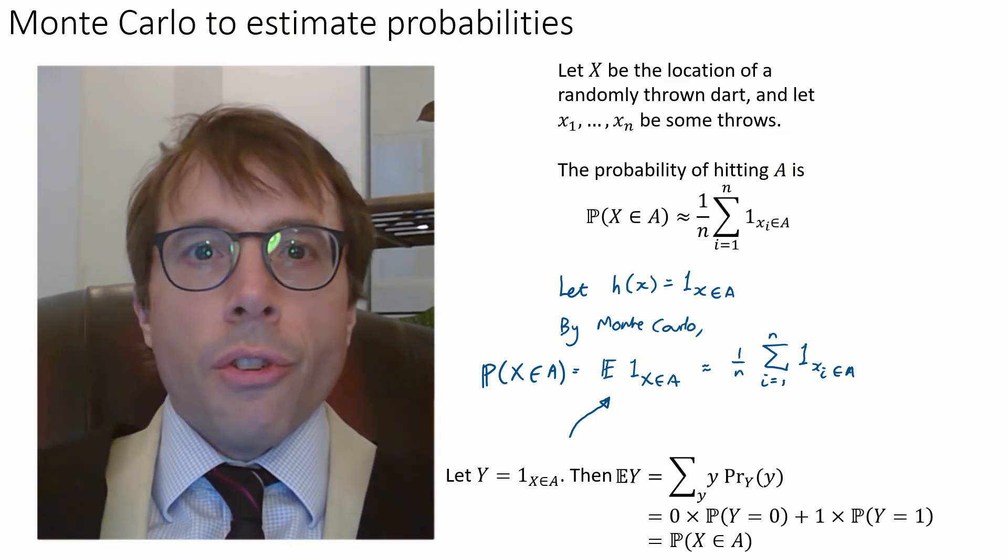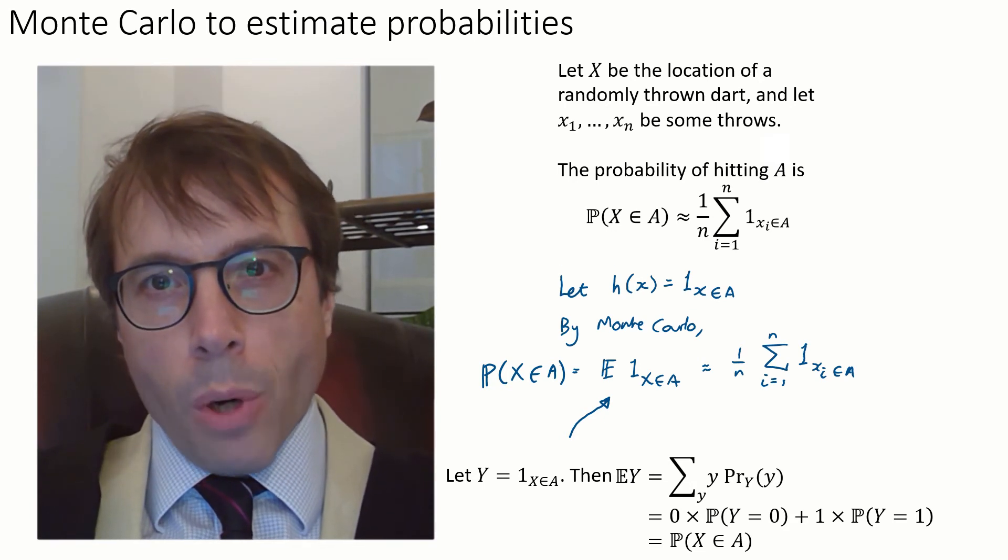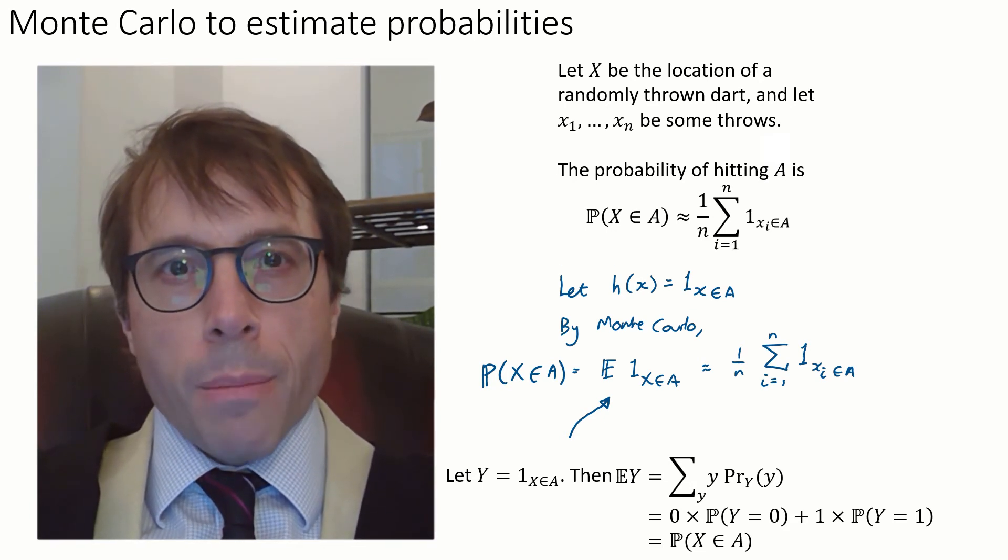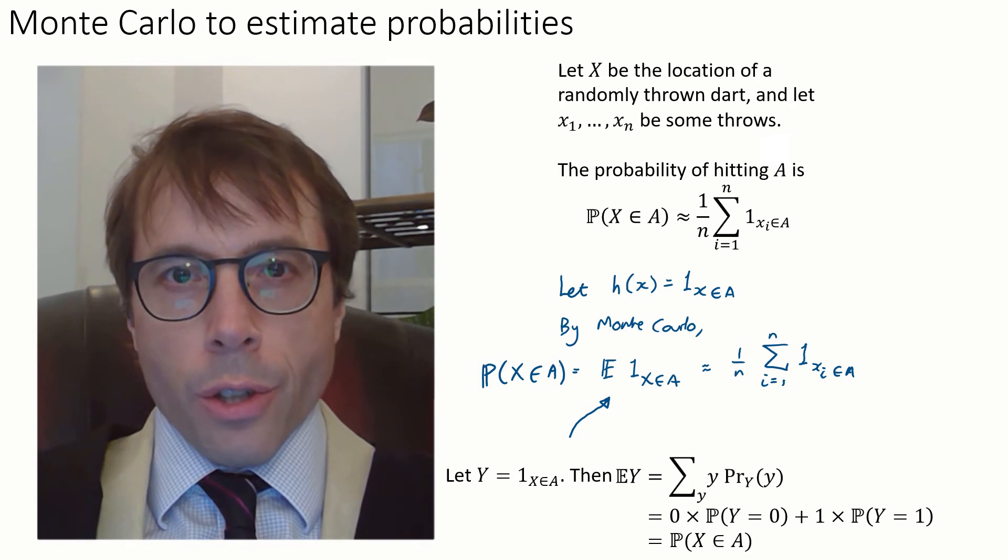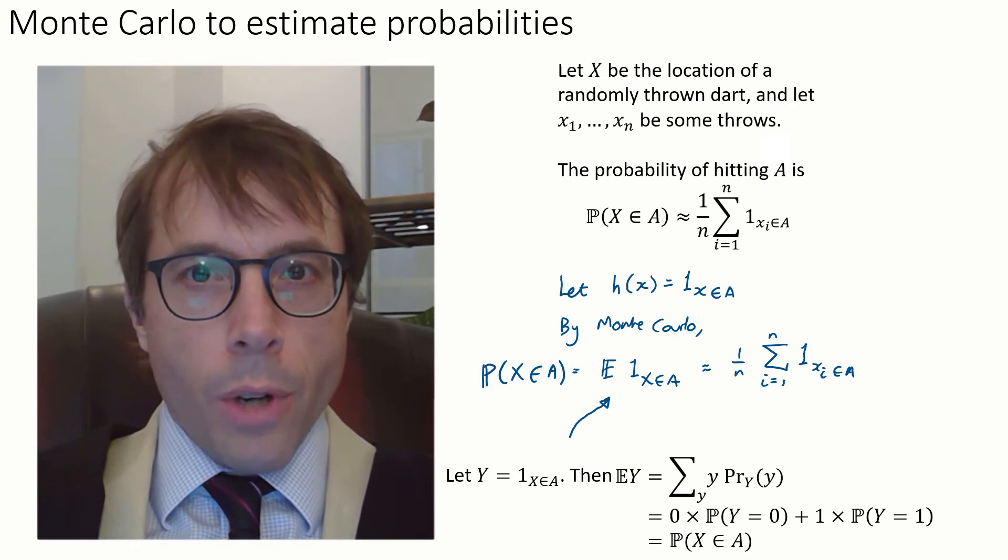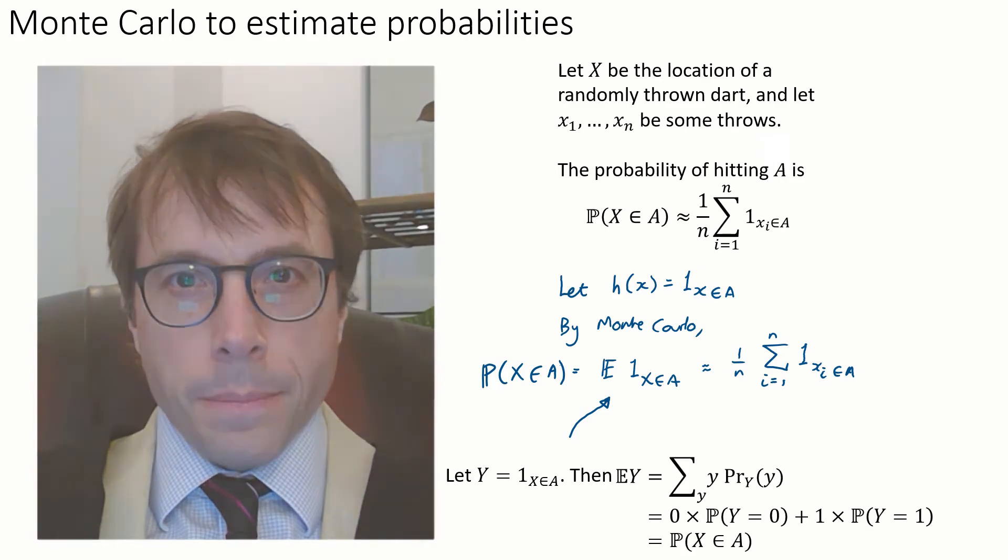So this is the link between the naive obvious way of estimating probabilities and the general statement of Monte Carlo integration. It all comes down to picking a good random variable x and a good readout function h. The exercises will ask you to think creatively about how to pick x and h for some other problems.